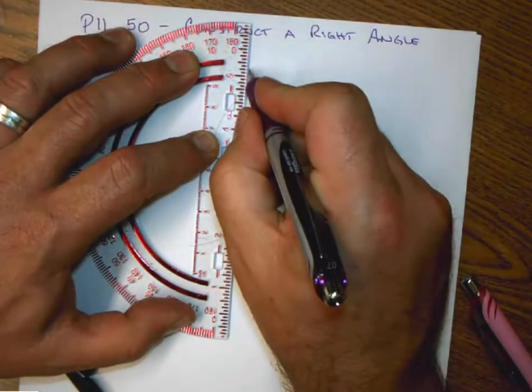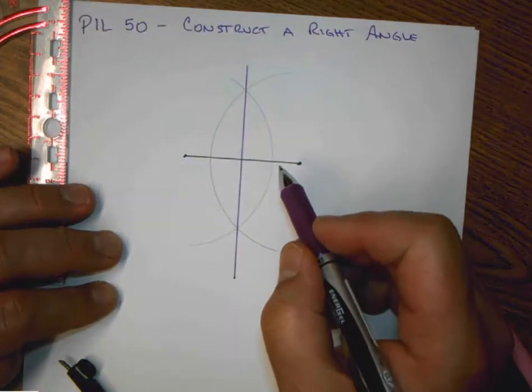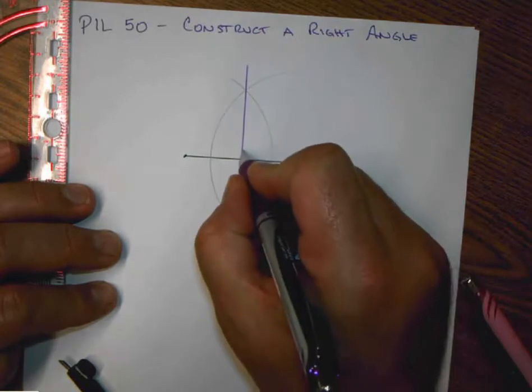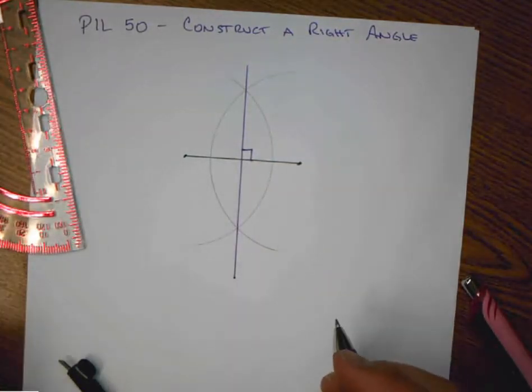I bisect the segment, but in this case I'm not really concerned about that. I am concerned with the fact that I've produced a right angle or perpendicular lines. Therefore, I have hereby constructed a right angle.